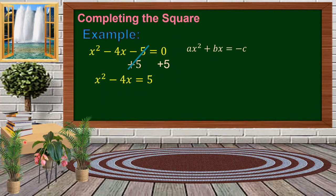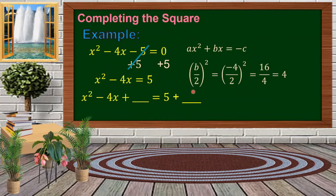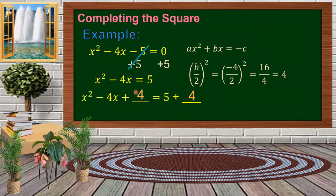We follow the completing the square pattern: x squared minus 4x plus a number on both sides. To find that number, we use the formula (b/2) squared. Here b is negative 4, so negative 4 times negative 4 is 16, divided by 4 gives 4. We add 4 to both sides. Then we factor the left side: x minus 2 quantity squared. And 5 plus 4 equals 9 on the right.